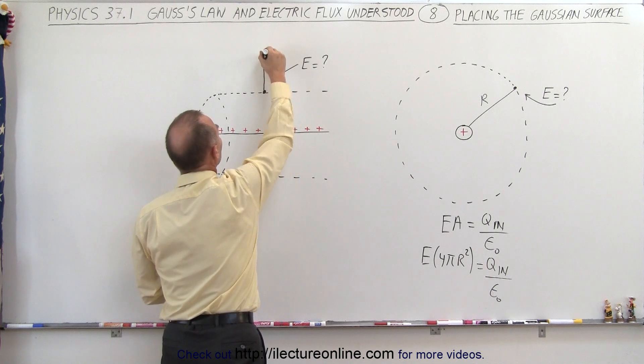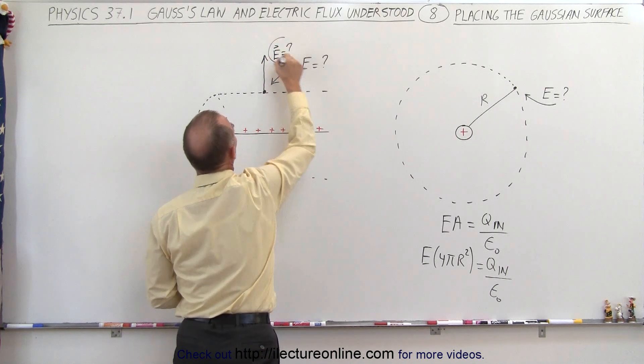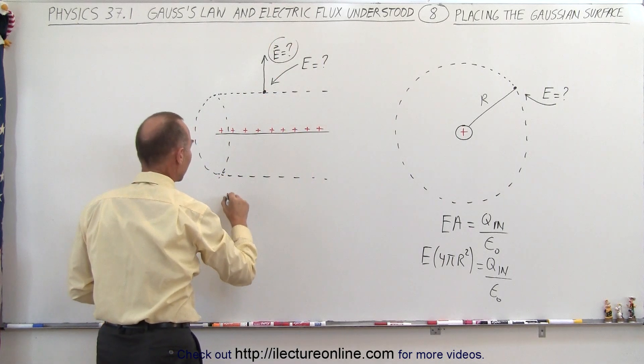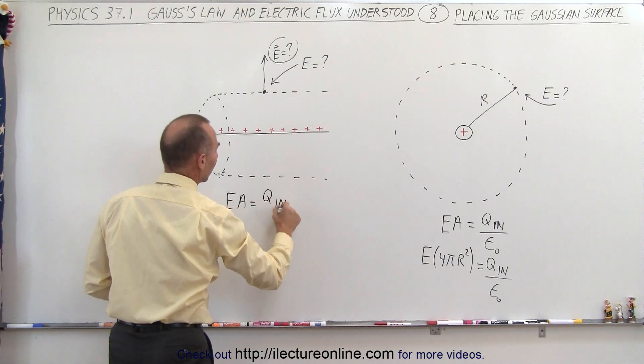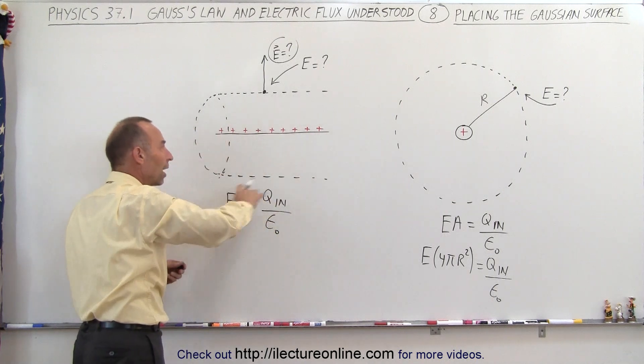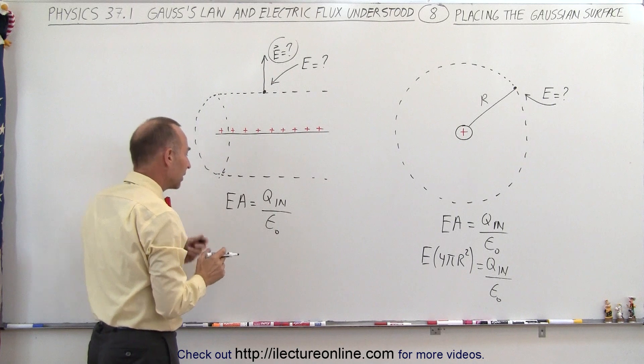And of course, the strength would be pointing directly outward. E, like this, is equal to the direction would be outward, and the strength will be found by saying that E times A is equal to Q inside divided by epsilon sub-naught. And in a later video, we'll show you how to use this equation to find the surface area of the Gaussian surface.